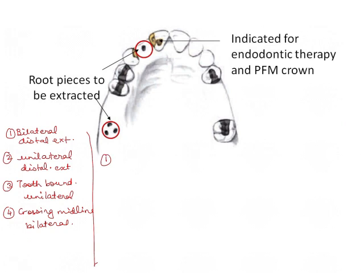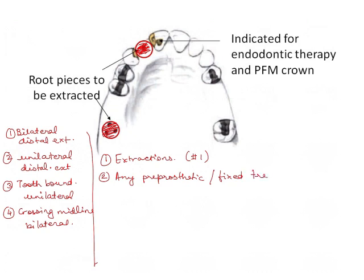The sequence to remember — always do the extractions first. The classification should be done after the extraction. The classification must follow rather than precede any extraction, otherwise it will change the original classification. That is Applegate Rule Number 1. So these root pieces here will be eliminated.